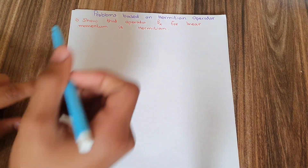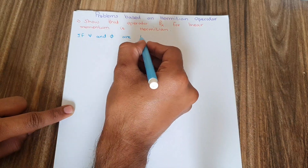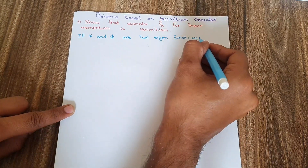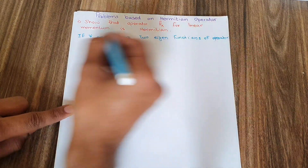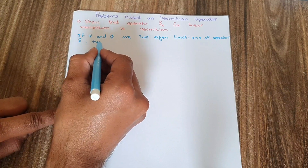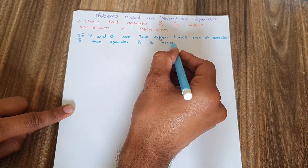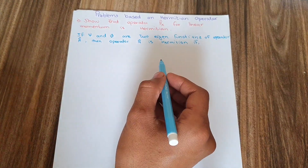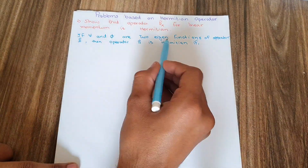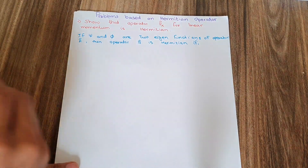To show this, first of all we need to take two functions. If psi and phi are two eigenfunctions of an operator A, then operator A is Hermitian if and only if it follows a certain condition. So now we are going to write the general equation for a Hermitian operator, given two eigenfunctions psi and phi of operator A.